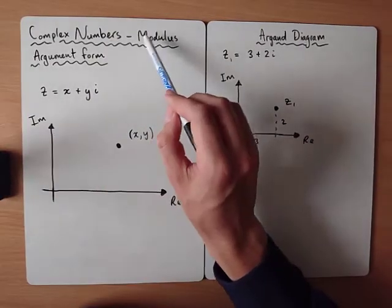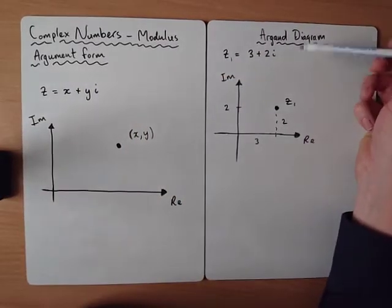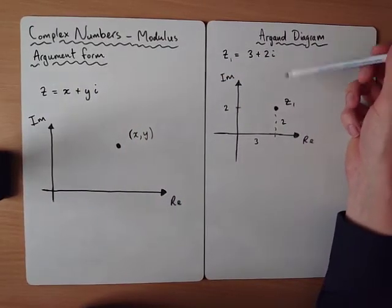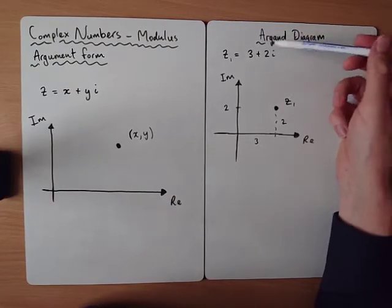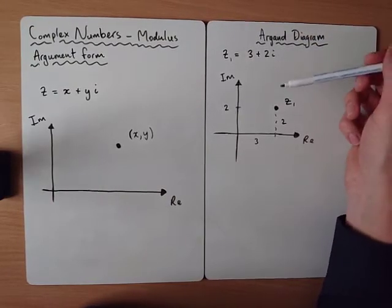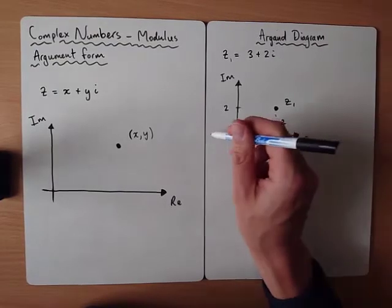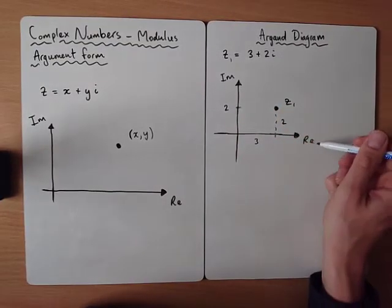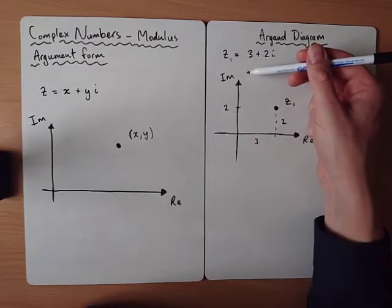To find the modulus argument form, we first need to briefly look at something called the Argand diagram, because we're going to be using a sketch. An Argand diagram is a way to represent a complex number in two dimensions, with a real axis and an imaginary axis instead of x and y axes.